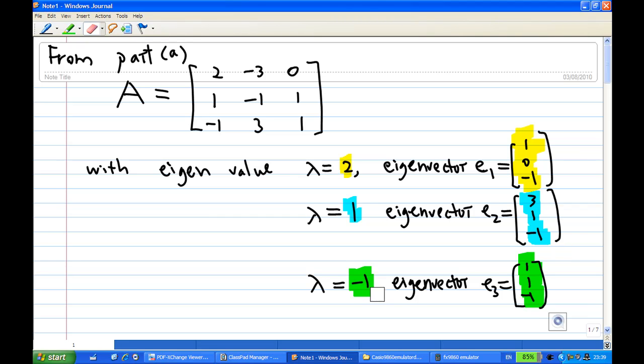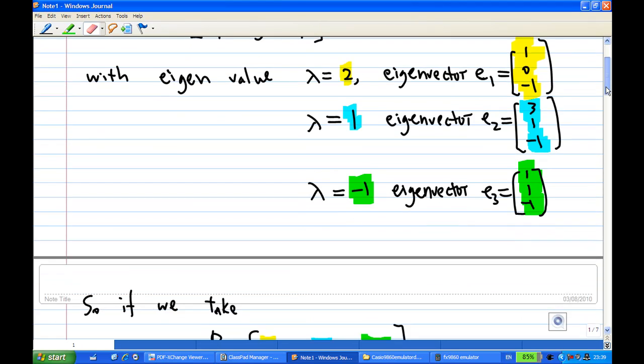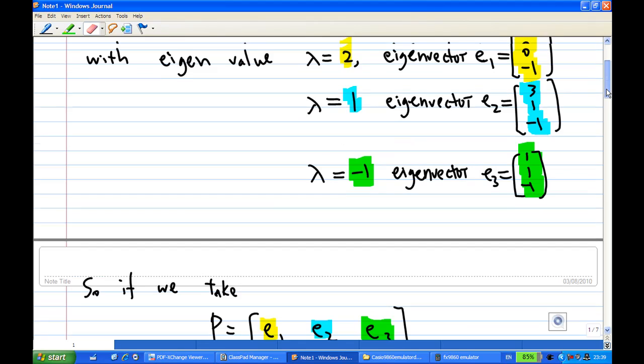If eigenvalue is minus 1, then we have the eigenvector E3 is 1, 1, minus 1. This is result obtained from part A. Now, what we do is form a matrix P using the eigenvectors.